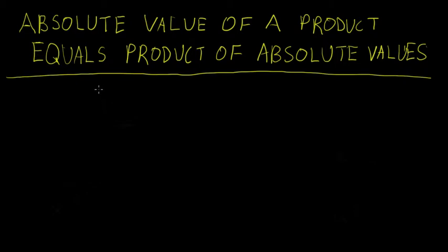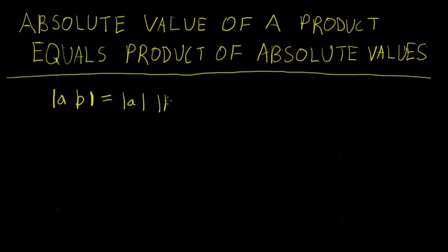In this video we are going to show that the absolute value of a product is equal to the product of absolute values. Basically, we want to show that the absolute value of A times B is equal to the absolute value of A times the absolute value of B, for any real numbers A and B.